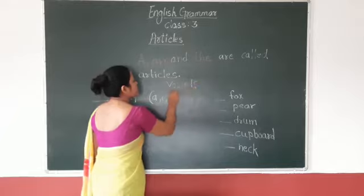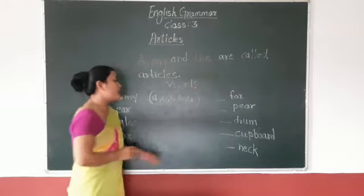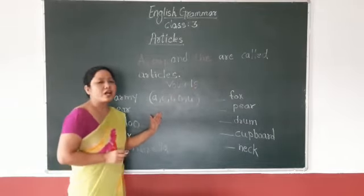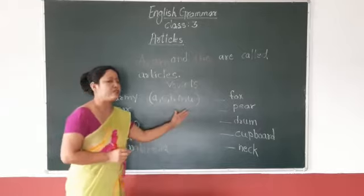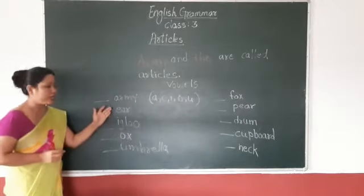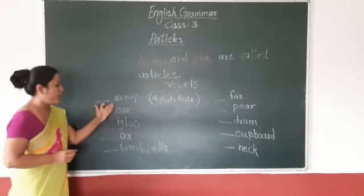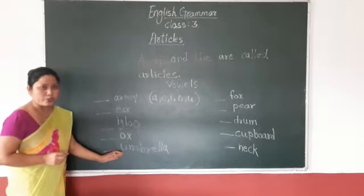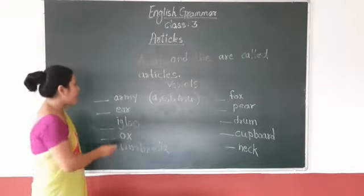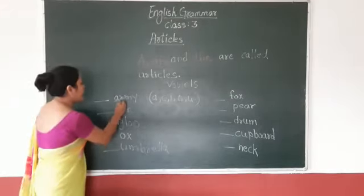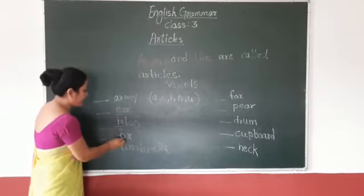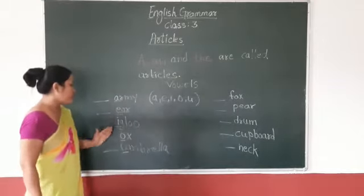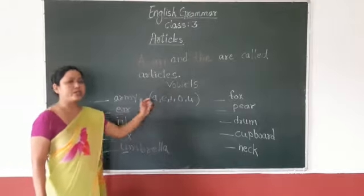So the words which start with these alphabets A, E, I, O, and U — these words are starting with vowels.